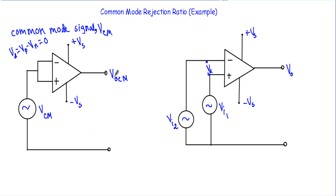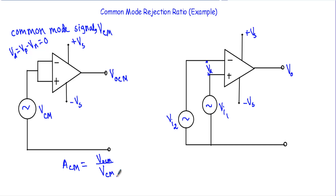If I want to calculate the common mode gain of this operational amplifier, since we have the output and the input voltage, we calculate the common mode gain ACM using this formula: ACM equals the common mode output voltage VOCM divided by the common mode input voltage VCM.